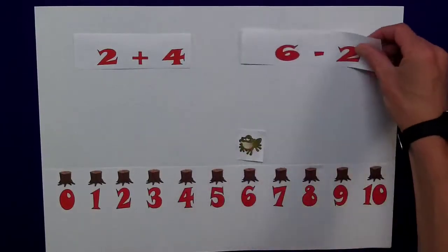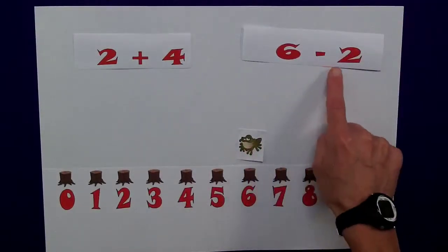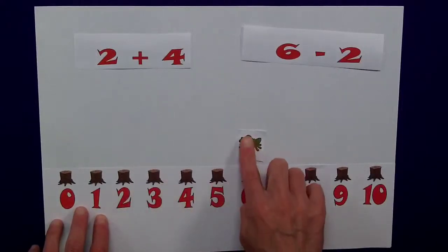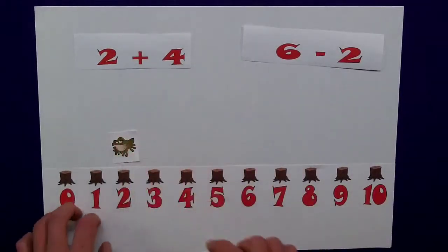Likewise, with a subtraction, starting at 6, taking away 2, my daughter would look here and try and get the frog down to the 2, when clearly that's not the case.